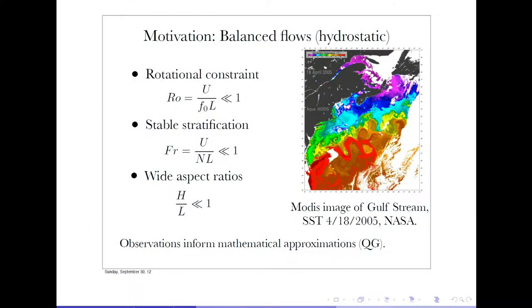Stratification can also be important. That's measured by something called the Froude number — it's the ratio of the same characteristic velocity divided by the Brunt–Väisälä frequency, which is the oscillation frequency in a stratified atmosphere, times the length scale L. This could be small or comparable to one, depending on whether you're talking about the atmosphere or the oceans.